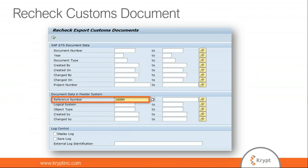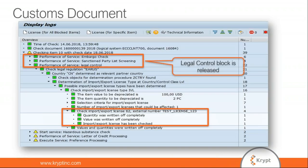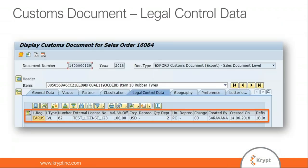After entering the active license in the system, you recheck the sales order and the block is released. The customs document will then show the legal control data: the legal regulation, the license number, the value utilized in the transaction, and how much quantity or value was depreciated from your license.